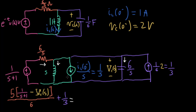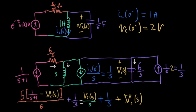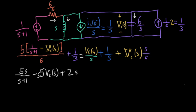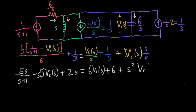I'll have 1/3 flowing in, and on the other side V_C(S)/S flowing out plus 1/S from the current source. For the capacitor, I'll have plus V_C(S) divided by the impedance, giving S/6. Multiplying through on both sides by 6S: on the left I'll have 5 over (S+1), then minus 5·V_C(S)·S. Multiplying 6S through gives 2S. Then 6·V_C(S) plus 6, and multiplying by 6 cancels the denominator to give S²·V_C(S).